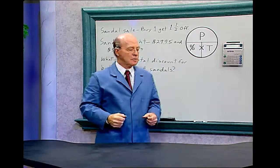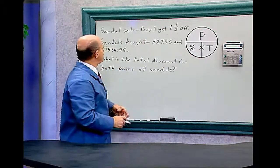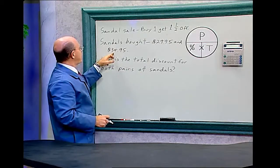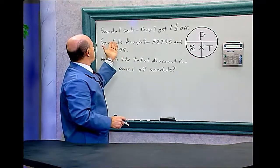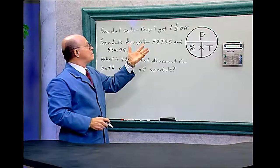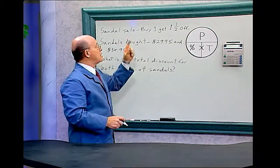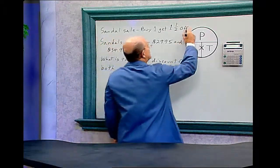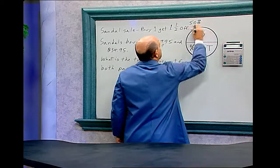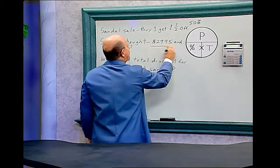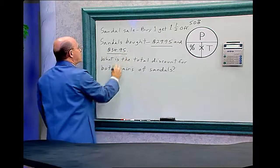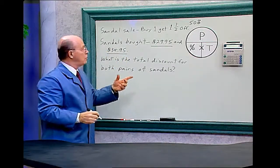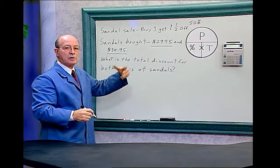Let's figure this out. You buy two pairs of sandals: one for $29.95 and the other for $34.95. The store has a sandal sale — buy one and get the other at one half off, which is a 50% discount. The discount applies to the cheapest sandal; they're not going to give you the discount on the more expensive one.